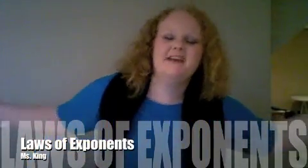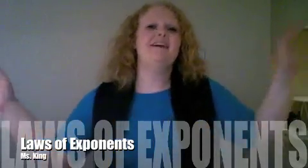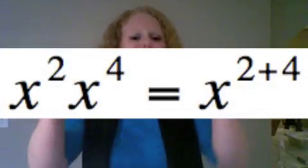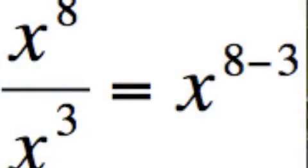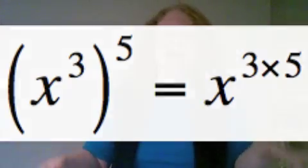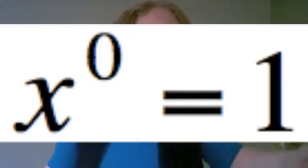Laws of exponents — know the rules. When you multiply, just add the exponents together. When you divide with like bases, subtract the exponents. Raise a power to a power, multiply them together. And an exponent of zero almost always gives you one. If you want to pass your next test, you'll know.